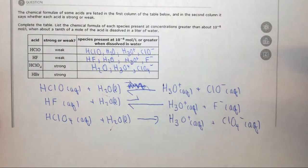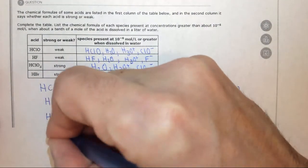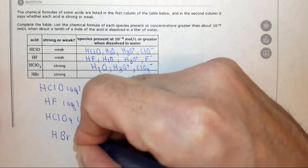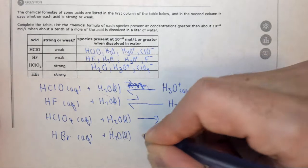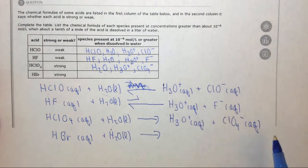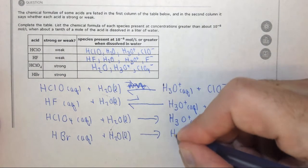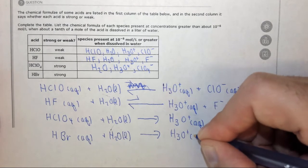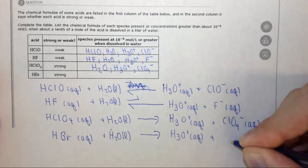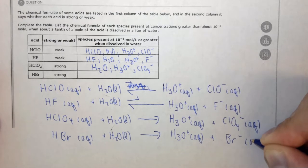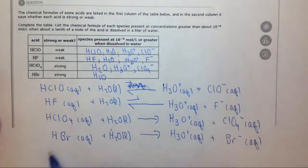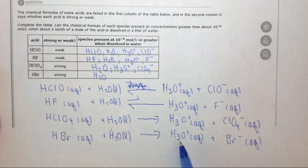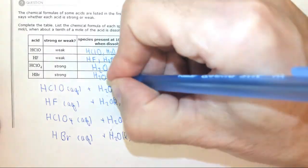HBr is a similar thing because it's a strong acid. So we have HBr aqueous, plus H2O liquid. Again the forward reaction is favored because it's a strong acid. We get H3O plus aqueous, plus Br minus aqueous. Again there's a huge excess of water, so we're still going to have water around, but we're not going to have any HBr because it's all going to go to form H3O plus and Br minus.